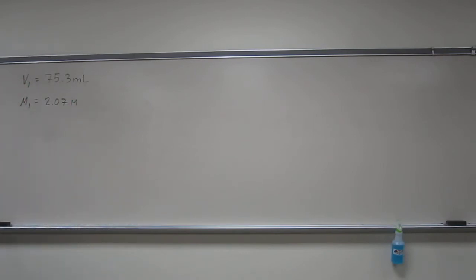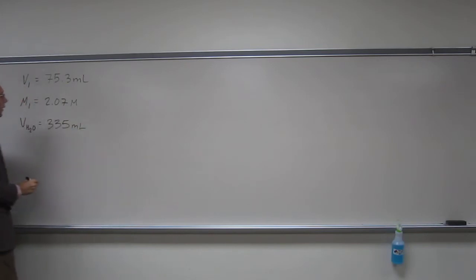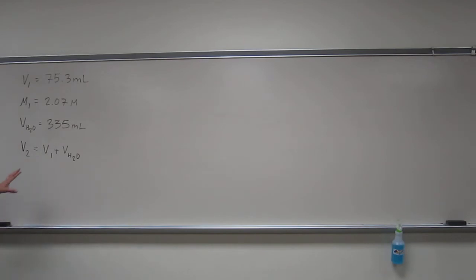And it indirectly actually tells us what the new volume of the solution is too. Because it tells us that the volume of water that was added is 335 mils of water. So how would we calculate, if you need a formula for everything, it would be V2 equals V1 plus VH2O. Is everybody okay with that formula?